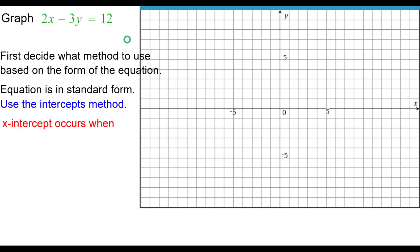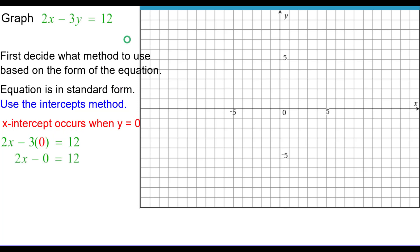The x-intercept occurs when the y-coordinate is 0. So we'll substitute 0 in for y: 2x minus 3 times 0. 3 times 0 is 0, so it becomes 2x equals 12. Divide both sides by 2 and we get x equals 6. So the ordered pair of the x-intercept is (6, 0).